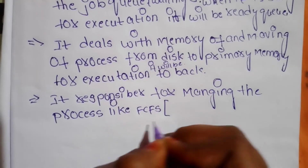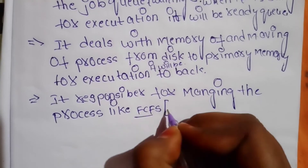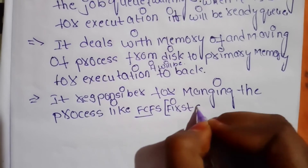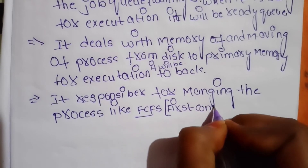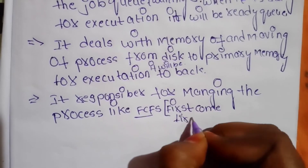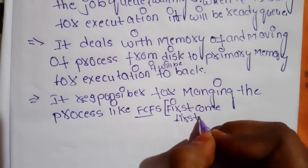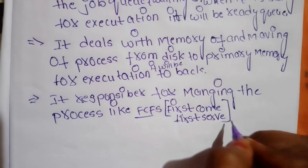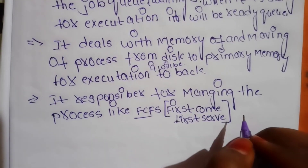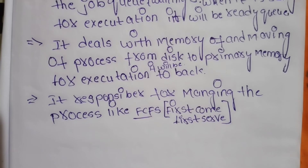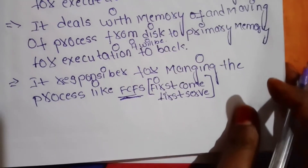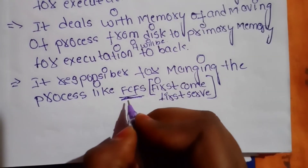Process management includes scheduling algorithms like FCFS, which stands for First Come First Served. In this algorithm, when a process enters first, it will be served first, and all other processes must wait. This is the FCFS algorithm.